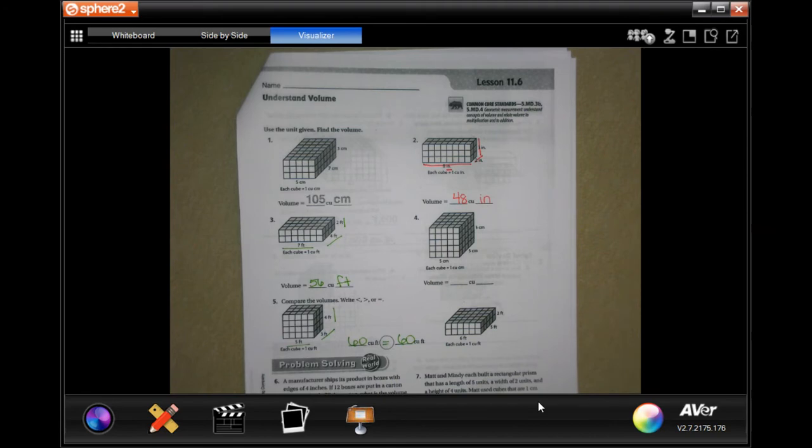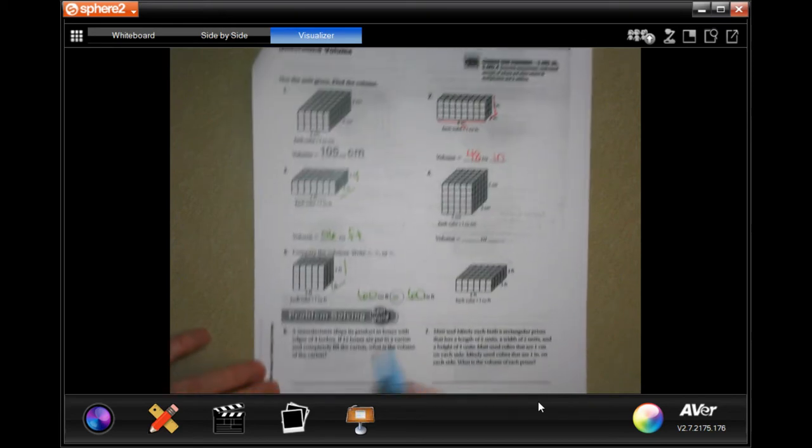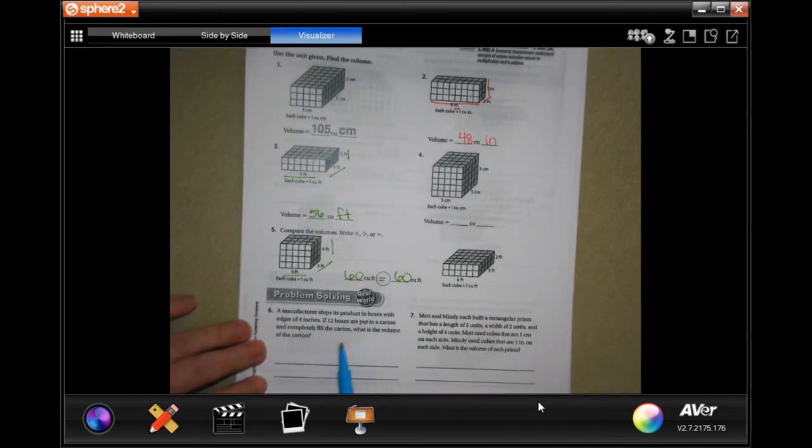We're going to do number six. The manufacturer ships the product in boxes with edges of 4 inches. If 12 boxes are put into a carton to completely fill the carton, what is the volume of the carton?